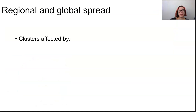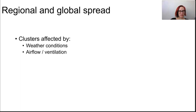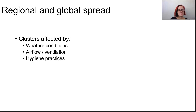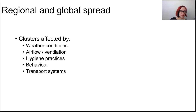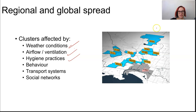When talking about regional and global spread, we talk about clusters — small outbreaks of disease appearing in local regions, sometimes called hotspots. Clusters can be affected by weather conditions like temperature, humidity, and rainfall, airflow and ventilation, hygiene practices, transport systems, and social networks. In Melbourne, for example, some suburbs have been considered hotspots, and social networks and transport systems may have had an effect.